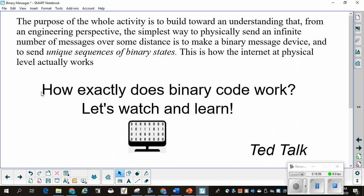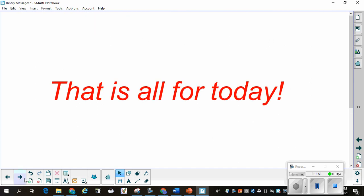Now, the purpose of these activities is to build toward an understanding that, from an engineering perspective, the simplest way to physically send an infinite number of messages over some distance is to make a binary message device and to send unique sequences of binary states. So, when you want four different things, you're going to send two different binary states. It's how the internet, at the physical level, actually works. How exactly does binary code work? We're going to watch and learn. This is a TED Talk, and I'm not going to bring it up here, but you should watch it when you finish this, close this lesson out, click on the TED Talk. It will be listed in the canvas as the next thing to do. And then that's it for today.